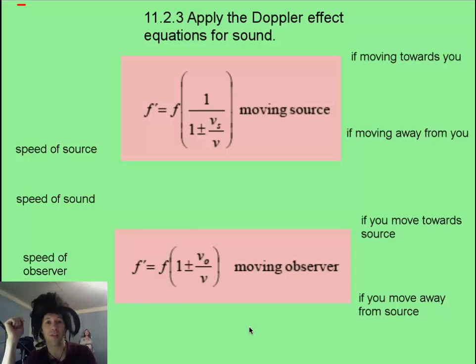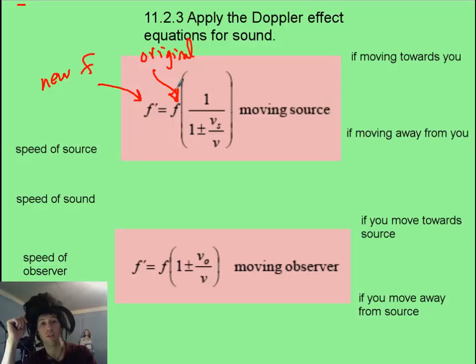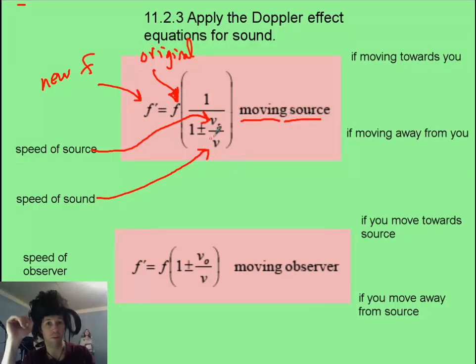This equation may appear quite daunting, but it's actually not too bad as long as you know what means what. This frequency f prime is going to be the new frequency as altered by the Doppler effect. This f is going to be the original frequency put out by the source. And then you've got the speed of the source on top and the speed of sound on bottom. That's if you are stationary as a listener and the source itself is moving. But you can see we've got a plus and a minus.